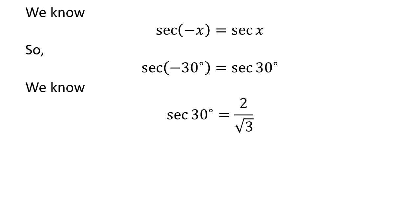We know the value of secant of 30 degrees is equal to 2 upon square root of 3.